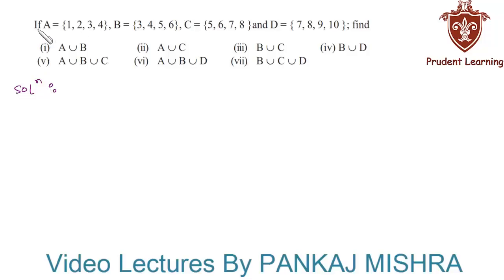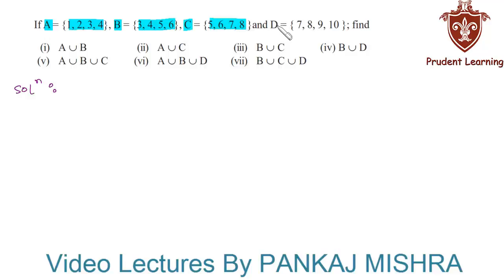In this question we have set A containing elements 1, 2, 3, and 4; set B containing elements 3, 4, 5, and 6; set C has elements 5, 6, 7, and 8; and set D has elements 7, 8, 9, and 10. With this information we have to find the value of the given operations. Let us try to find the value of each section one by one.